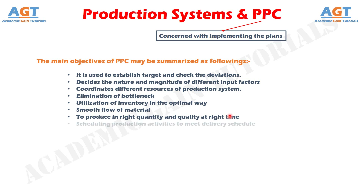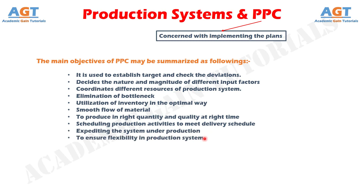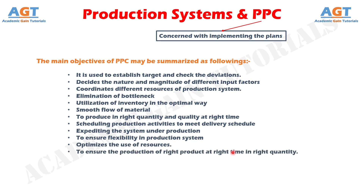PPC aims to produce in right quantity and quality at the right time, scheduling production activities to meet delivery schedules, and expediting the system under production. It ensures flexibility in the production system to accommodate changes and uncertainty, optimizes the use of resources for minimum overall production cost, and ensures the production of the right product at the right time in the right quantity with specifications suited to customers, maintaining a stable production system with least chaos, confusion, and undue hurry.